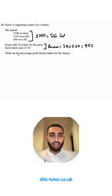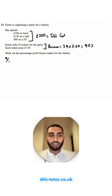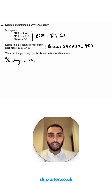Work out the percentage profit Karen makes for the charity. To work out percentage profit, this is just asking us what's the percentage change. And to work out percentage change, we find the change divided by the original and then we multiply that by 100.